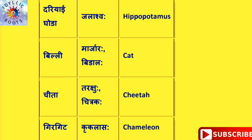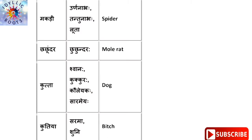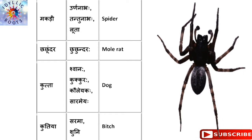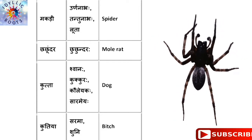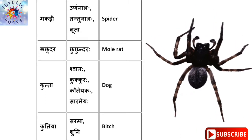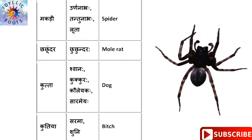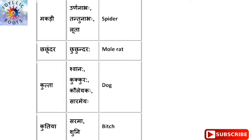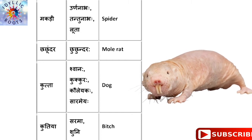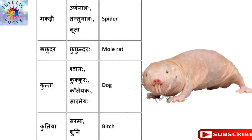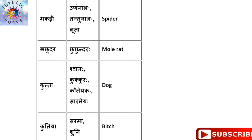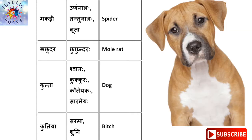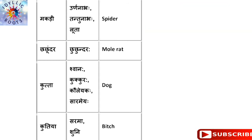चीता को English में कहते हैं Cheetah और संस्कृत में कहते हैं चित्रकः या तरक्षुः। गिरगिट को English में कहते हैं Chameleon और संस्कृत में कहते हैं कृकलासः। मकड़ी को English में कहते हैं Spider और संस्कृत में कहते हैं तन्तुनाभः या लूता या ऊर्णनाभः।